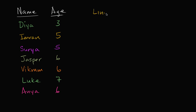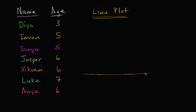I've always viewed the term 'line plot' as a bit confusing, because in my brain you use a lot more dots than you use lines. But let's look at what a line plot is. I will draw a line right over here, and then I'll create buckets for each of the ages.